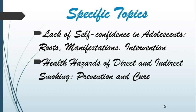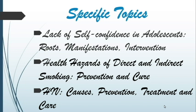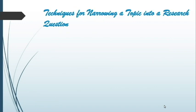Smoking hazards is specified by stating the health hazards of direct and indirect smoking, along with its prevention and cure. Human immunodeficiency virus or HIV is specified by adding its causes, prevention, treatment, and cure. It is important to specify because through specifying the topic, you will know your scope and limitations and where you will focus your research project.